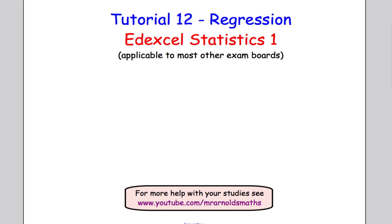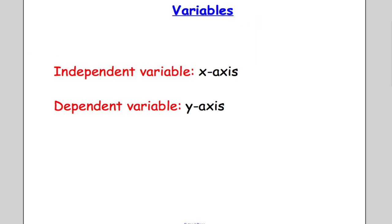Now before we carry on with regression we just need to have an understanding of one thing and that's about variables and where they go. The independent variable always goes on the x-axis when we're drawing our scatter diagrams and the dependent variable goes on the y-axis.